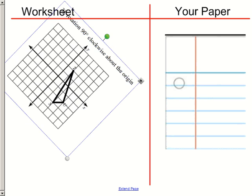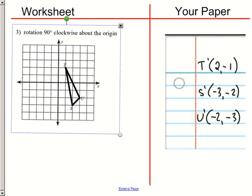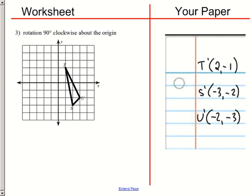Clockwise, so one-fourth of a turn. Let's see. That would be two, negative one. Negative three, negative two. And there's U prime, so let's see. Negative two on the x-axis, negative three on the y-axis. Just want to make a little bit of a mess right there, but we can't do anything about it.